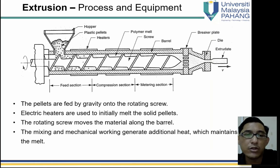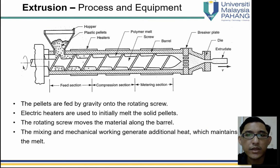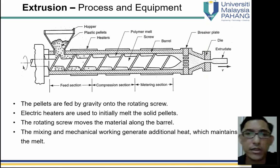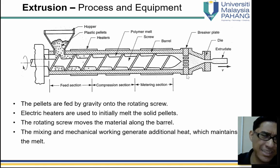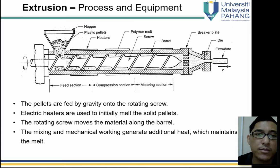The pellets are fed by gravity onto the rotating screw — we just put them in the hopper and the pellets will feed down on their own using gravity. Electric heaters are used to initiate the melting of the solid pellets, providing extra energy to melt the plastic. The rotating screw moves the material along the barrel towards the die. The mixing and mechanical working generate additional heat which maintains the melt throughout the extrusion process.